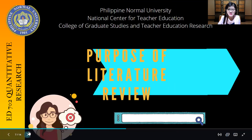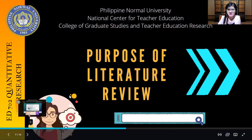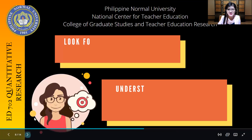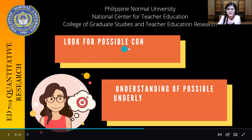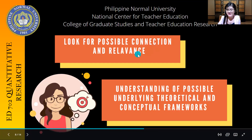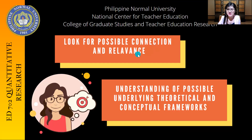Now, what's the purpose of literature review? First, it looks for possible connection and relevance. As mentioned, when we look for other materials or other sources, we are trying to build connections and make them relevant to our topic or to our own topic of interest.